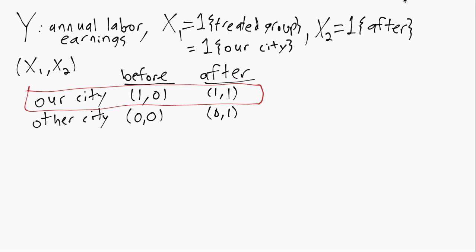For example, if there were a big recession, then that would cause earnings to go down regardless of whether there's a minimum wage change or not. Or conversely, if there's really good macroeconomic conditions, our city may benefit from that separate from whatever effect the policy does or does not have.